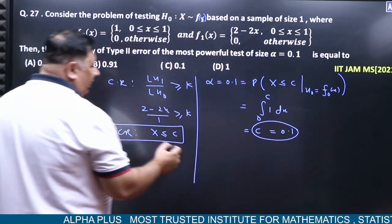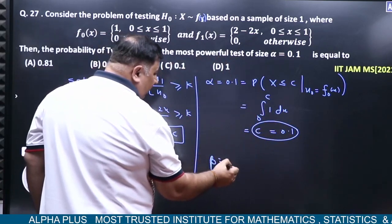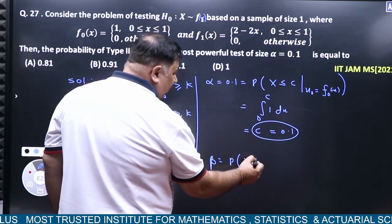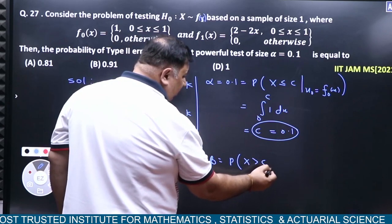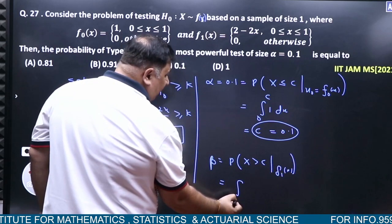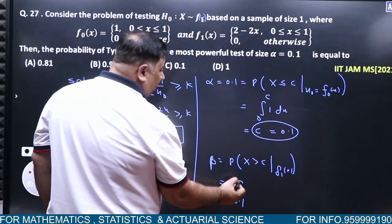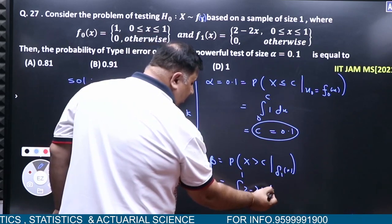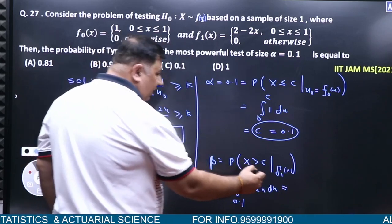Type 2 error needs to be found. Type 2 error is the probability of not rejecting, so x is greater than c under f₁(x). So for f₁(x) with greater than c, meaning from c value 0.1 to 1, integrate 2 minus 2x dx.